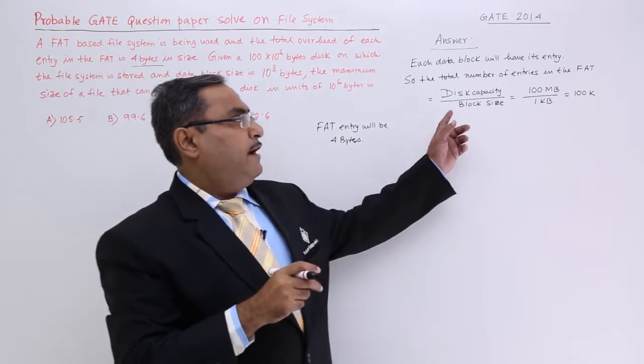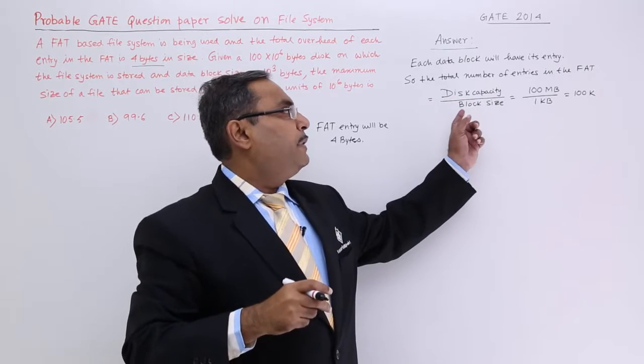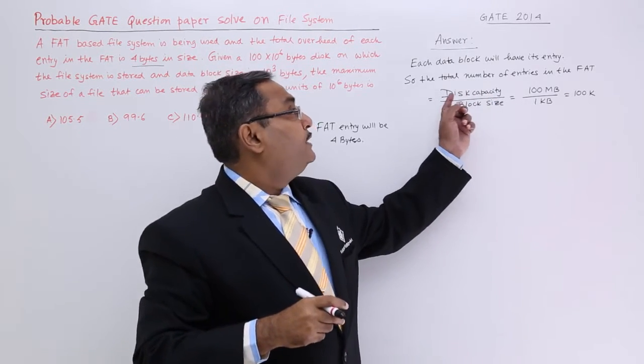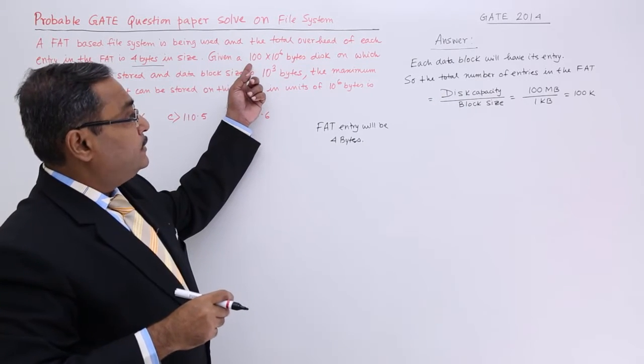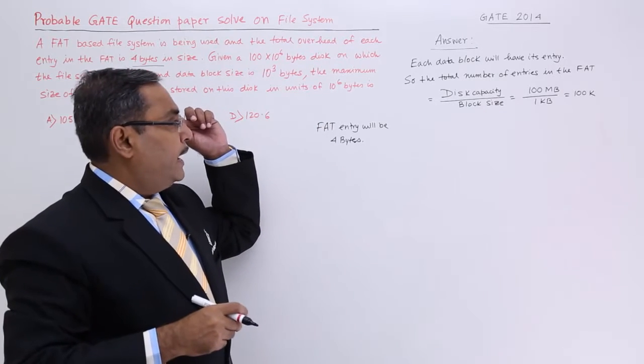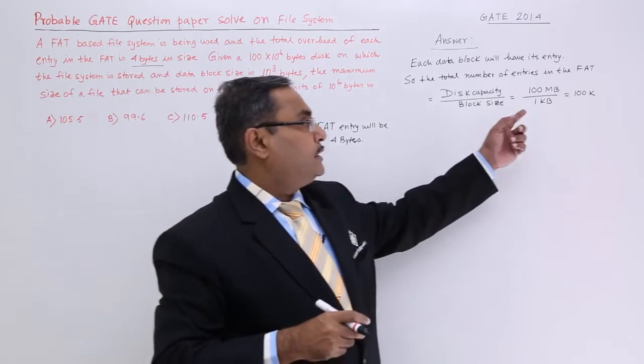The total number of entries in the FAT will be disk capacity by block size. Disk capacity they have told is 100 megabytes and the block size we had is 1 KB, that is the block size.